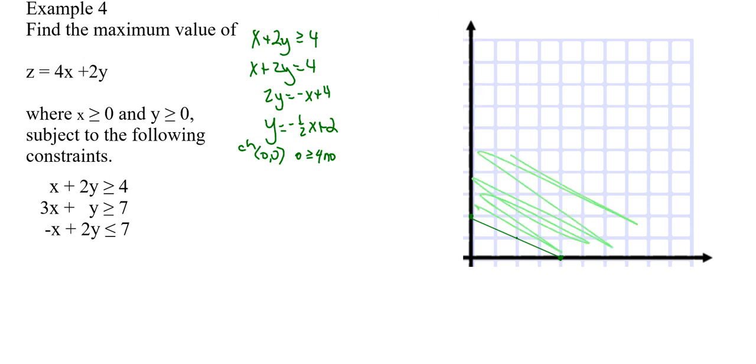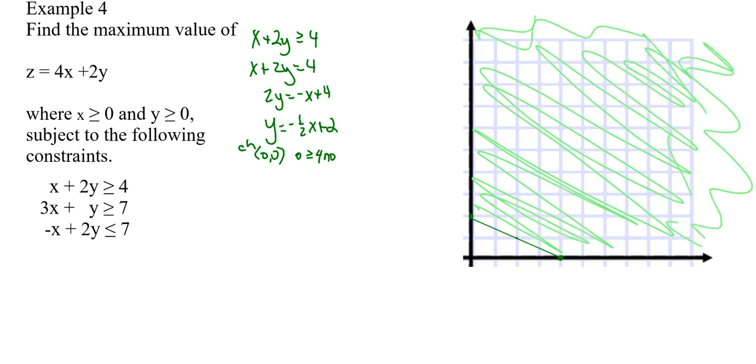Then we've got 3x plus y is greater than or equal to 7, so 3x plus y equals 7 is our equation. Y equals negative 3x plus 7, and so 7 is our y-intercept.